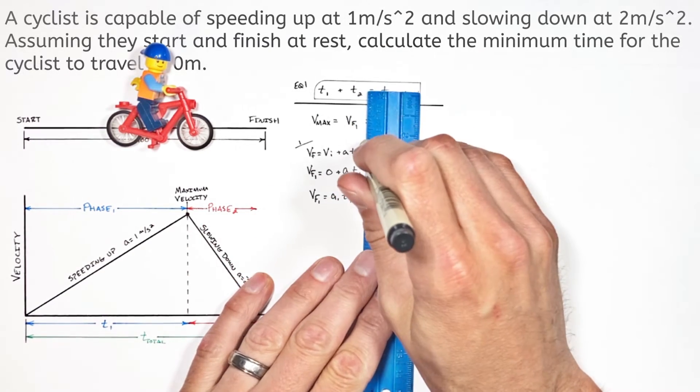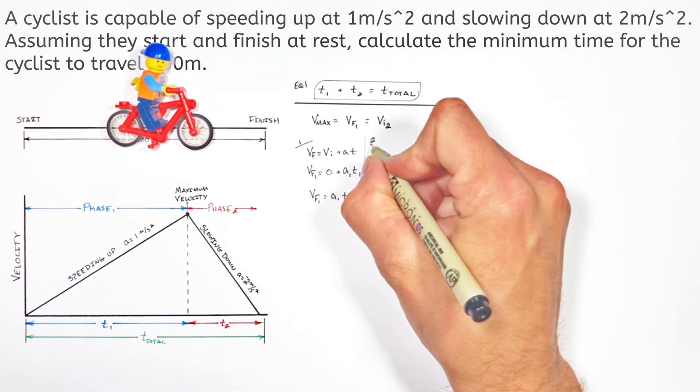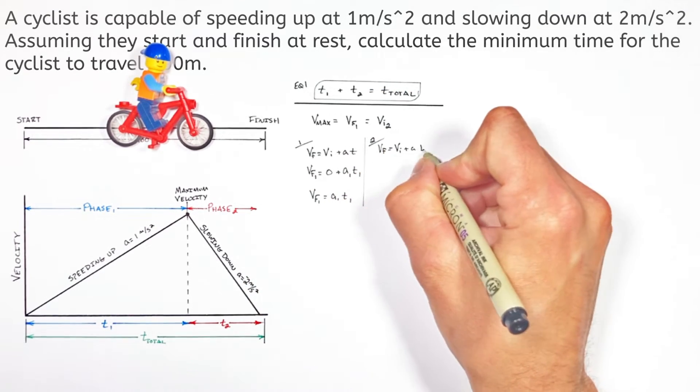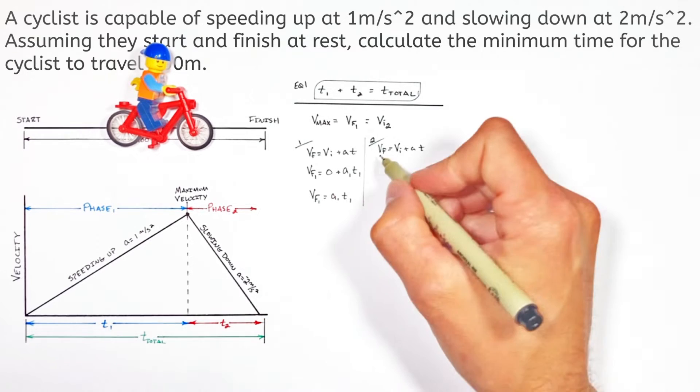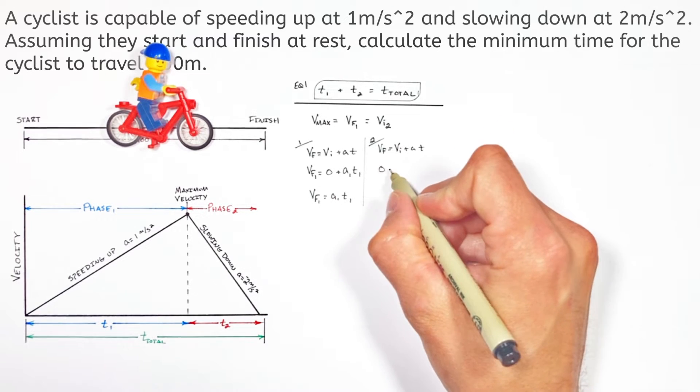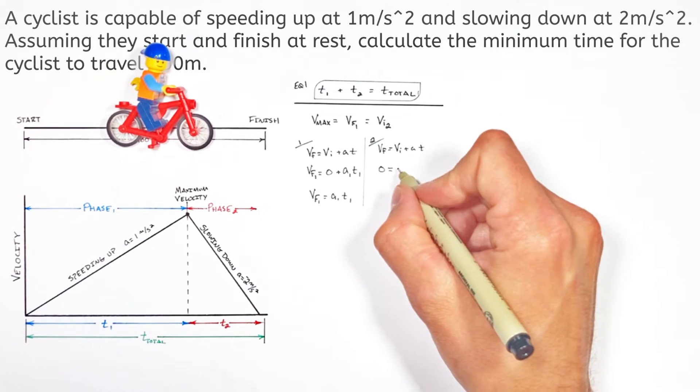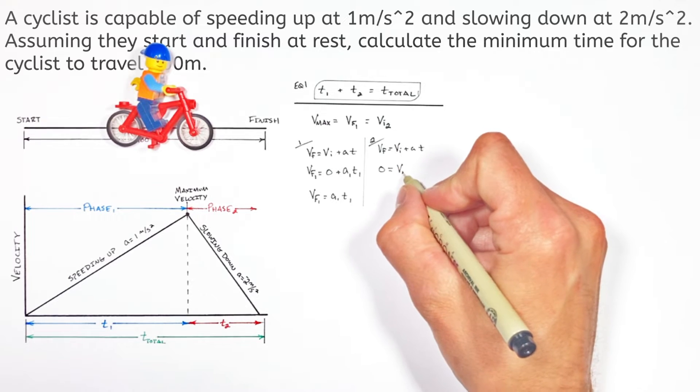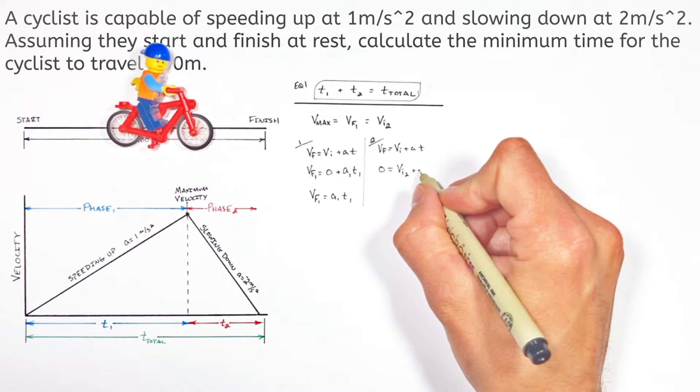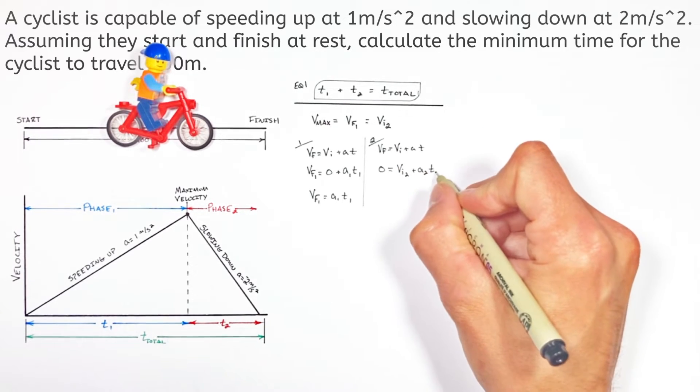And we can do the same thing with the second phase of motion. Using the same kinematic equation, in the second phase of motion, the final velocity is going to be 0. Now the initial velocity, we don't know, we're just going to call it VI2.